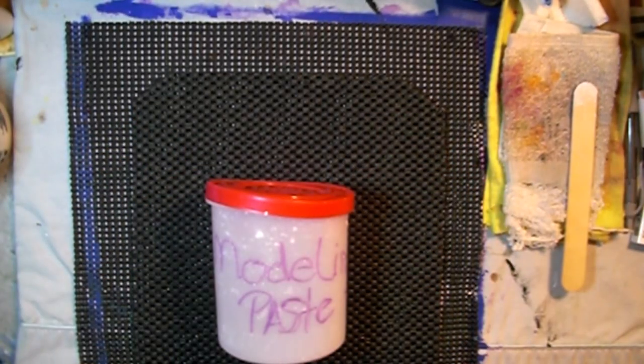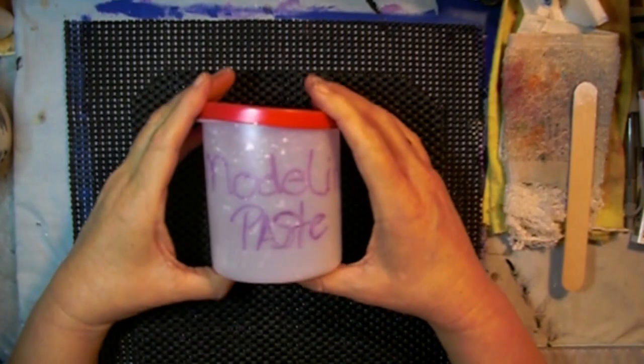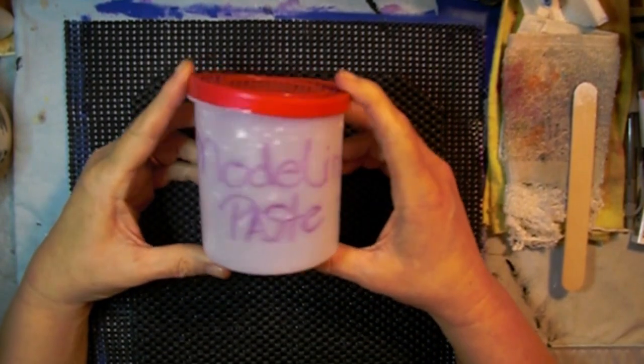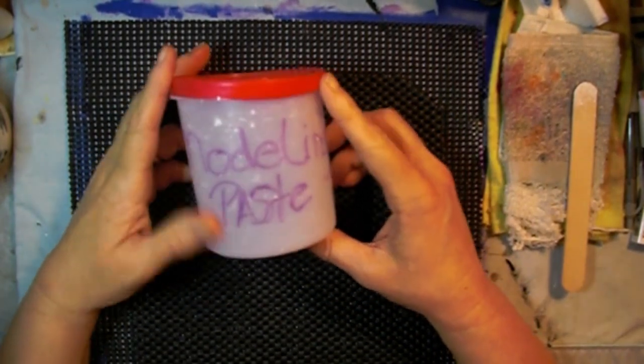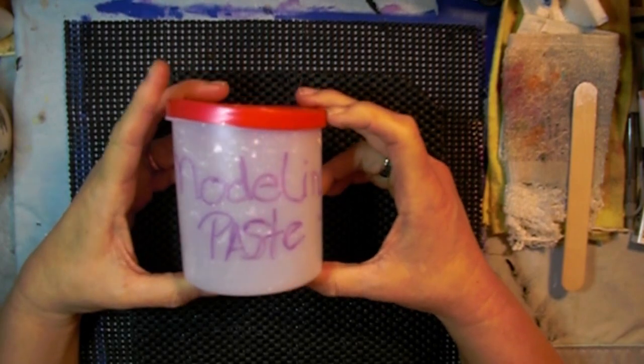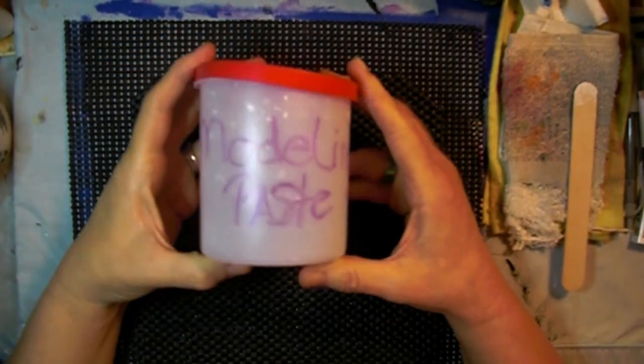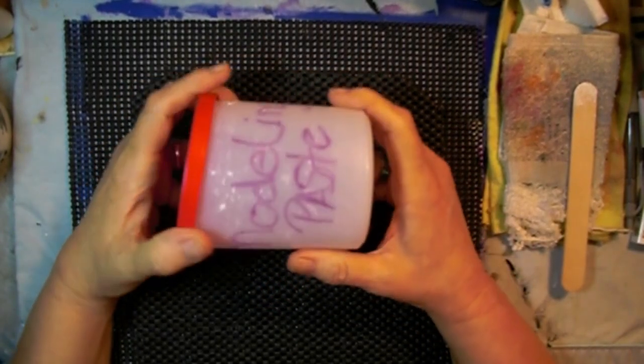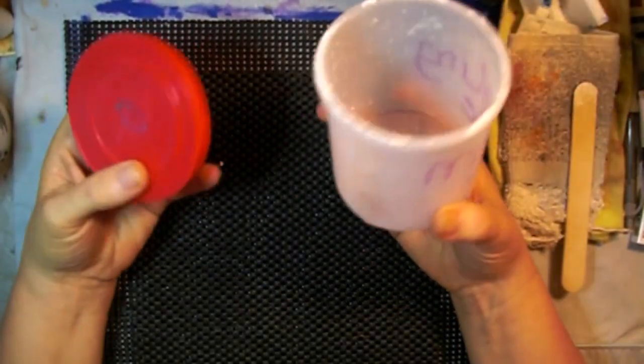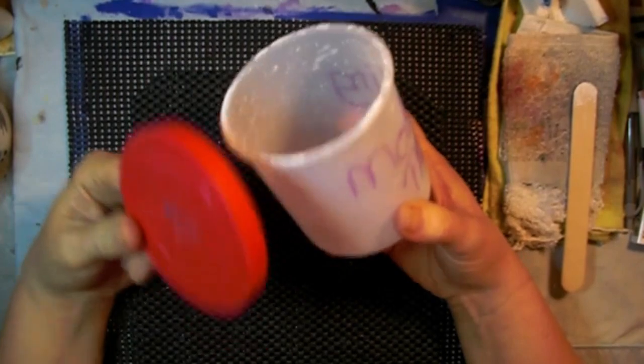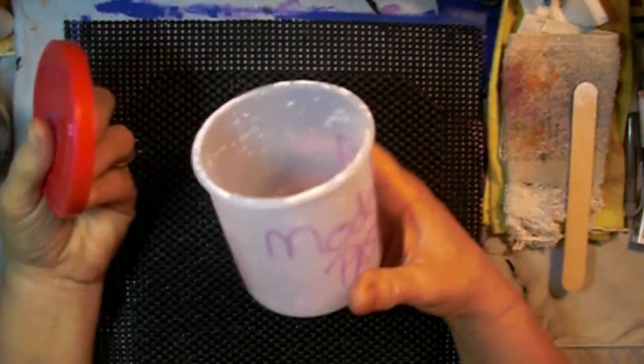Hello artsy fartsy creatives. I'm out of modeling paste and I need to make some more up, so I figured I would show you how I do it. This is a repurposed food container. I think it was some frosting.